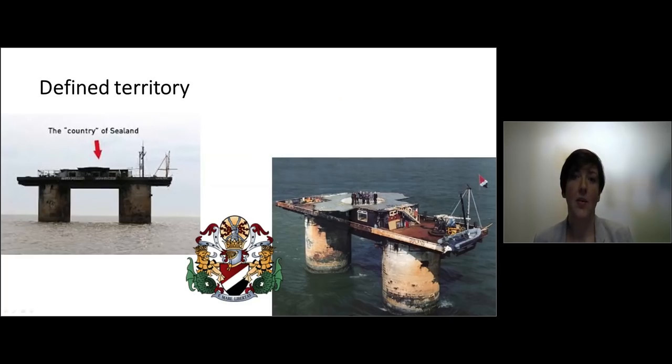Then we move on to the territory. So the state must have a certain defined territory. Here on these pictures you see the state of Sealand, which was proclaimed in the 1970s. It is established on a platform in the ocean just before the coast of Great Britain. This country exists, has its own flag. You can also buy on the internet a noble title. If you have desire to become a count or a countess, you can buy this noble title for the country of Sealand. But is it actually a state?